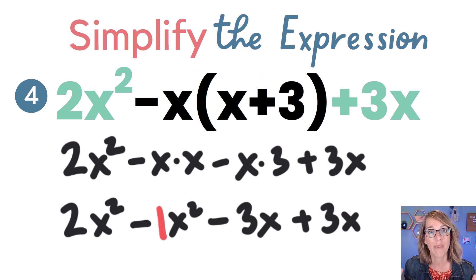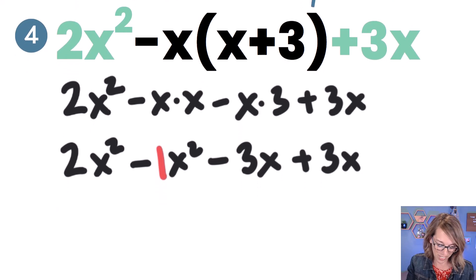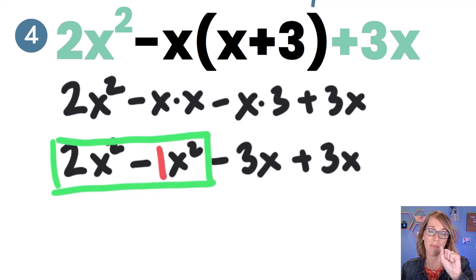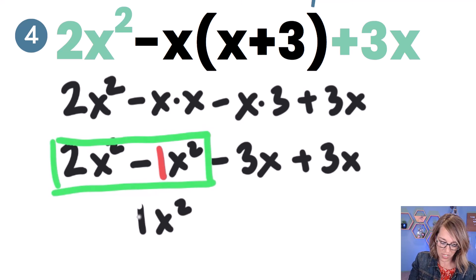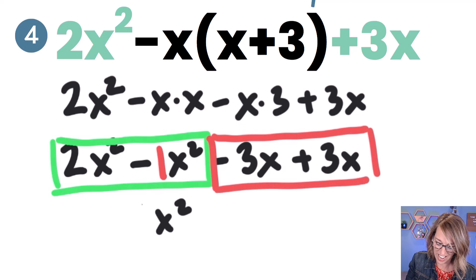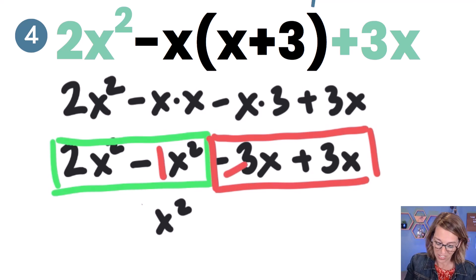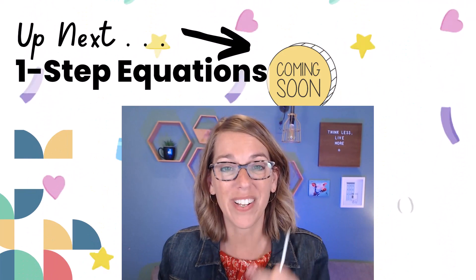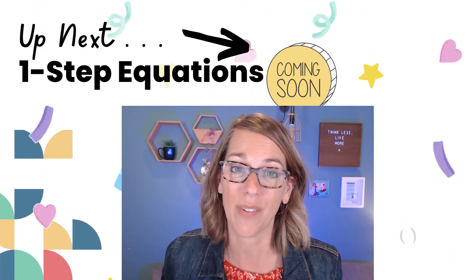Now we're ready to combine like terms. I've got the x squared terms — I've got two of them and I'm taking away one of them, which leaves me with one x squared. You can get rid of the one because it's implied. And then I've got negative three x plus three x. If I add those coefficients together, negative three plus three is zero, so these cancel each other out. And my answer is x squared. How did you do? I'll bet you did great. Take a look at my very next video on one-step equations. Thanks so much for watching.